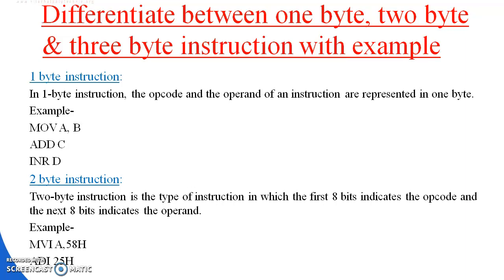Next are 2-byte instructions. A 2-byte instruction includes the first 8 bits indicating the opcode and the next 8 bits indicating the operand. For example, MVI A, 58H — here 58H indicates the operand. ADI 25H — 25H indicates the operand. These are 2-byte instructions.